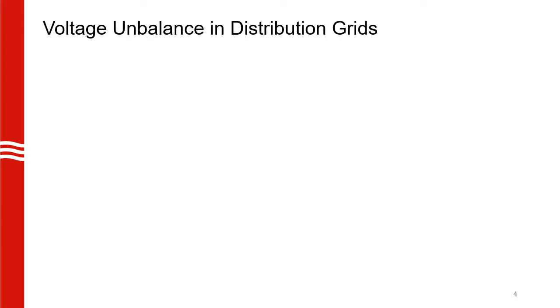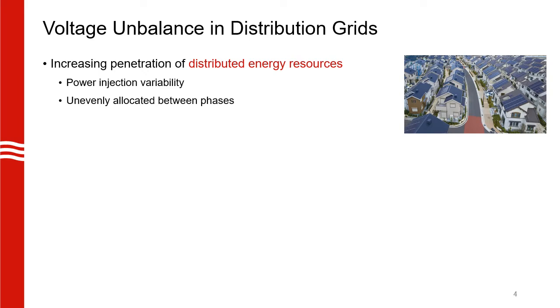As you all know, there has been growing deployment of DERs such as rooftop solar PV in the recent past. This makes it challenging to efficiently operate the grid because DERs typically have uncertainty associated with their power injections. Also, they are not allocated evenly between the three phases of the distribution grid. This gives rise to a power quality issue called voltage unbalance.